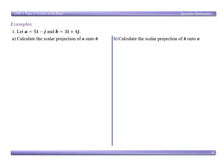So example one, we've got two vectors a and b. Calculate the scalar projection of a onto b. So we want the scalar projection here. a onto b is going to equal our vector a dot product with our unit vector of b.